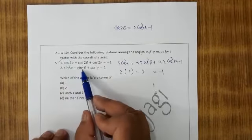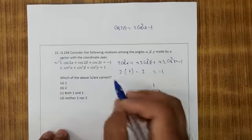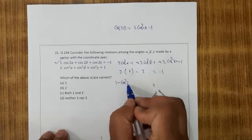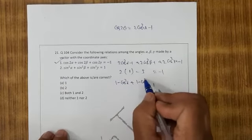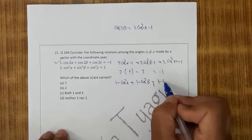Sin square alpha plus sin square beta plus sin square gamma. Sin square alpha is 1 minus cos square alpha, 1 minus cos square beta, 1 minus cos square gamma.